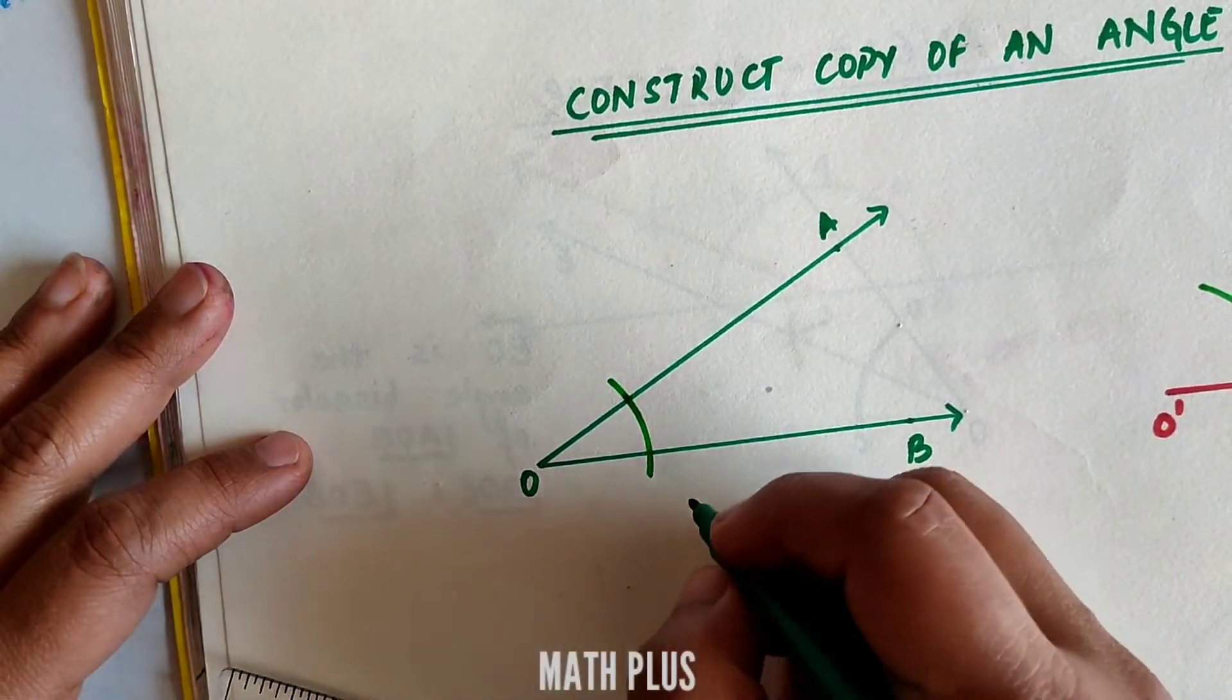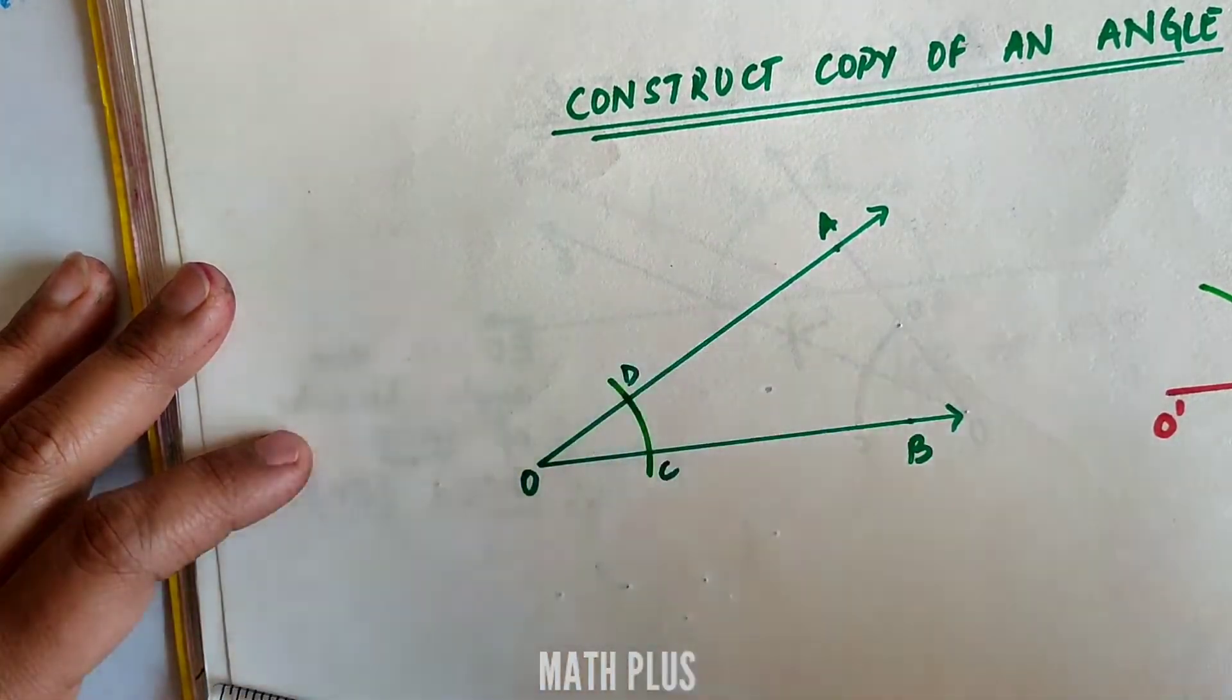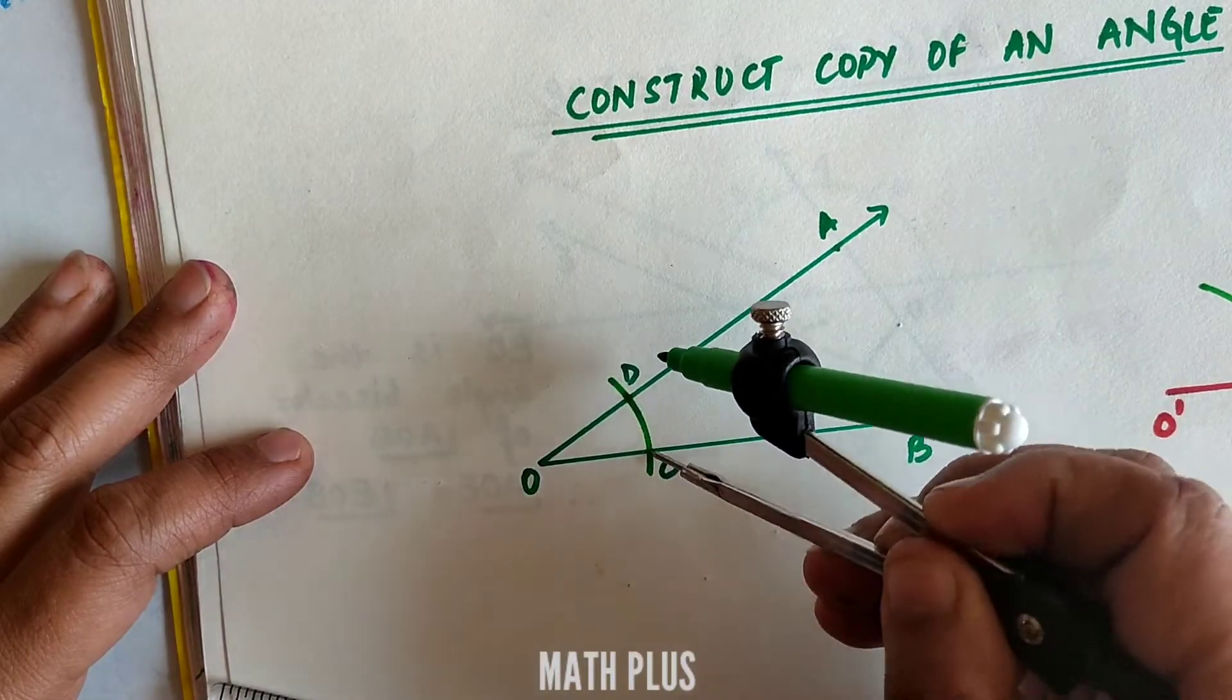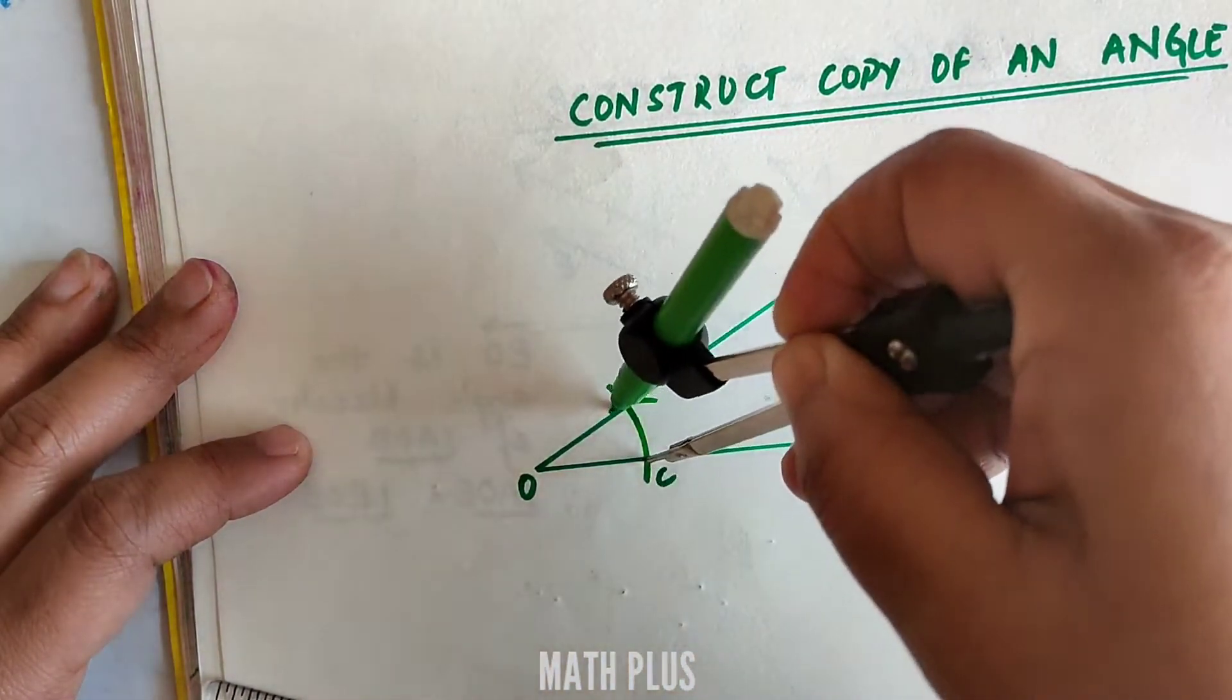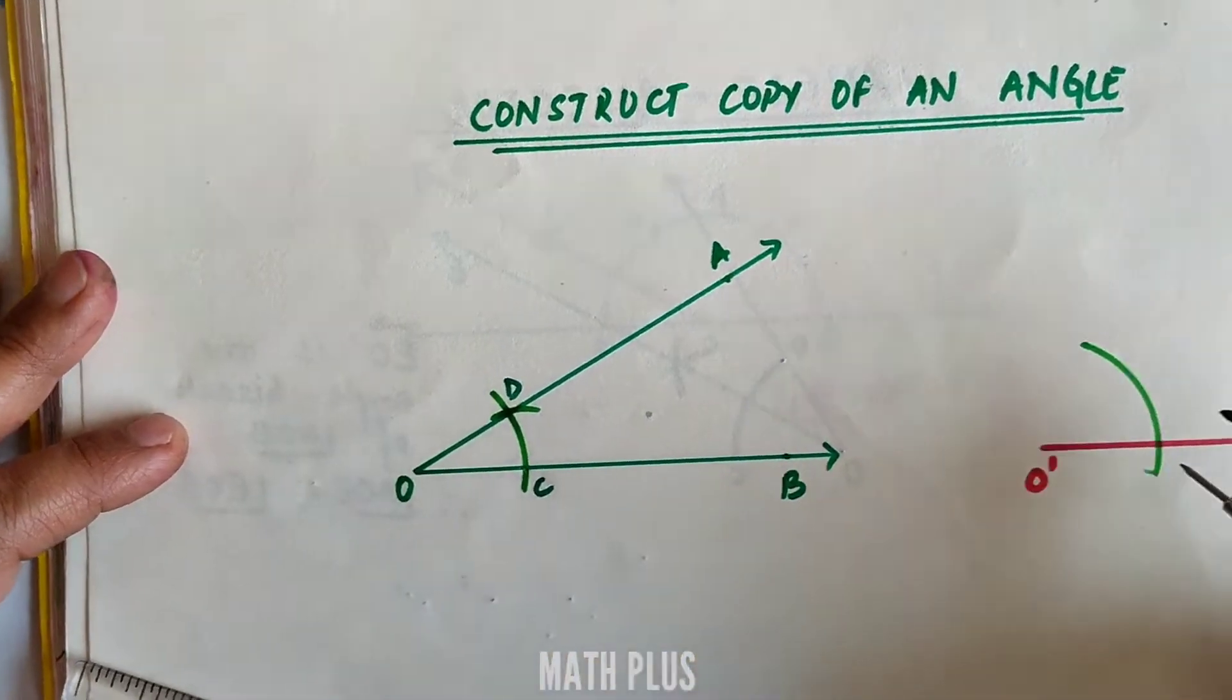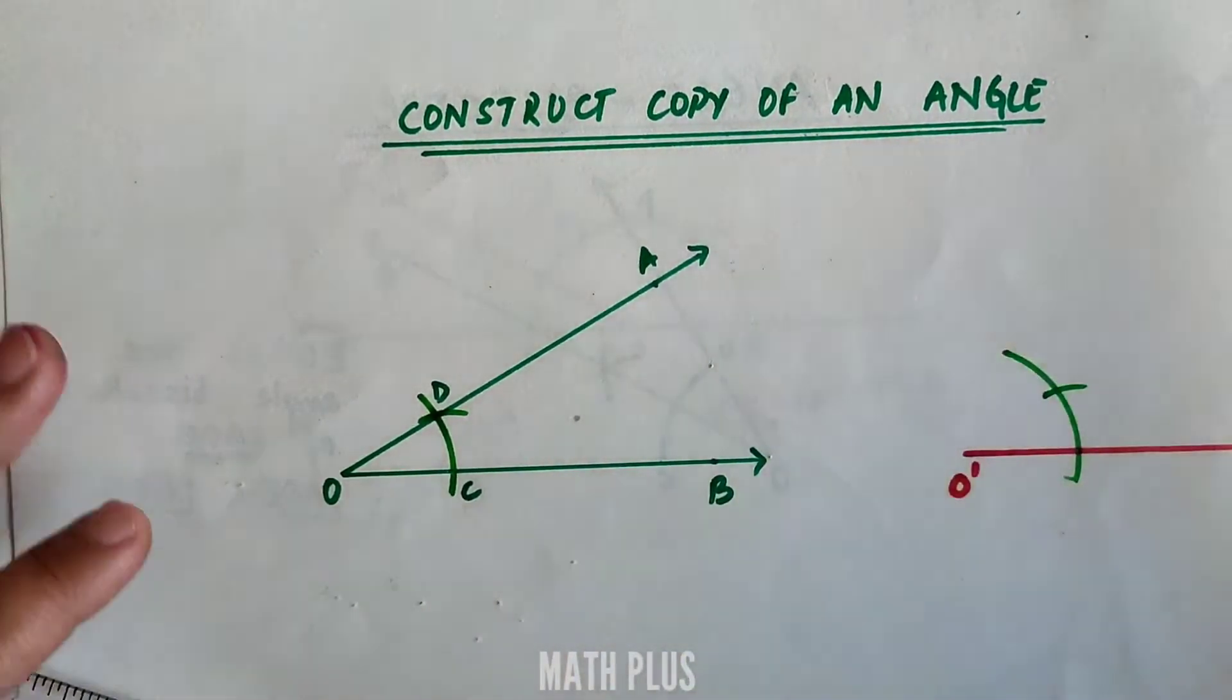Now keeping the compass at C, measure the length to D. So CD gives us the measurement of the angle over here, and we keep the same at the other side of the other angle.